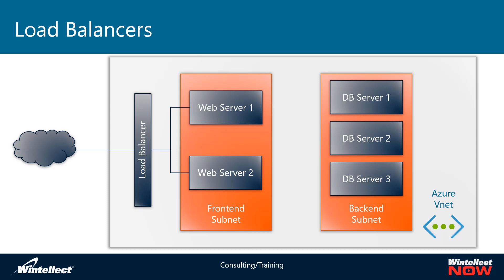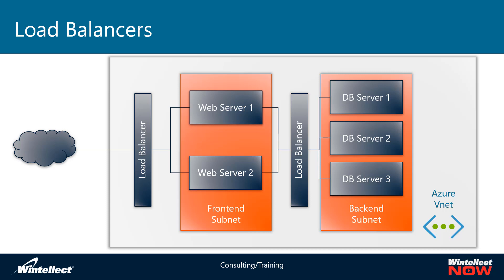Much like the front-end web servers, the database servers need some way to route the incoming requests so that any one of those three database servers can handle that request. So here I have yet another load balancer, and the requests coming in from the web server are sent to that load balancer, which has an internal IP address. It can then forward that request onto the backend database servers — pick server one, two, or three — and the backend load balancer is monitoring those servers to make sure they're alive and healthy. This is a very minimal setup for what might be considered a highly available application on Azure.